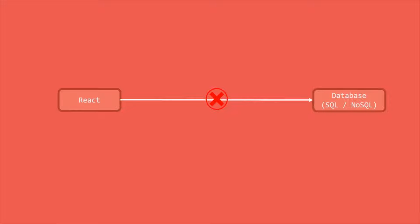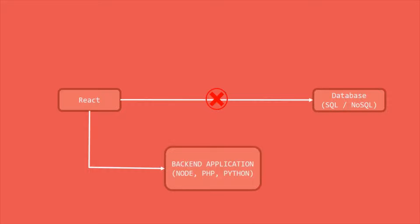So if you should not directly connect to your database from your client-side application, then how should you interact with the database? Well, for that, you can create a backend application running on a server, and this backend application can communicate with the database. Now, since this backend application is running on a server, your users will not have access to this backend code. And in this way, you can safely store and use database credentials in the backend application, because this backend code can't be viewed by your users — it is on a different server and the users of your React application will never be able to see that code.